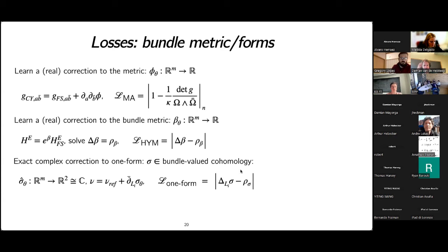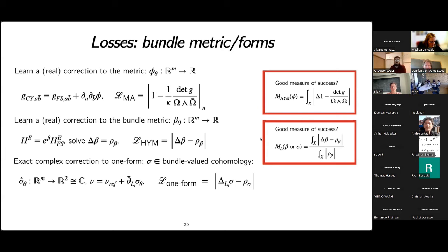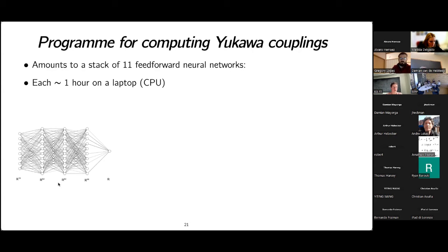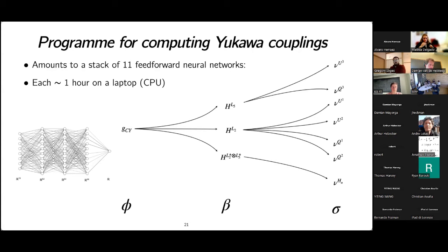The losses we train with are simply the absolute value of the Poisson equation integrated over the manifold, minimized during training. Computing the Yukawa couplings amounts to a stack of 11 feed-forward neural networks, each taking around one hour on a laptop CPU — no large GPU setup required. Each network has three hidden layers with 64 units. We train first the Calabi-Yau metric, then the Hermitian bundle metrics which depend on it, and then the harmonic one-forms which depend on both the bundle metrics and the Calabi-Yau metric.